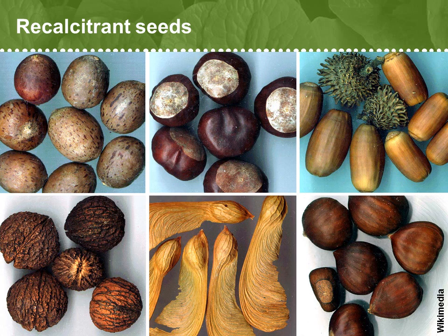Seeds that don't secrete ABA can't go dormant and are called desiccation intolerant, or recalcitrant, and it can be a real challenge to save them in seed banks. Some rice varieties fit into this category and can even sprout on the parent plant, which of course renders the grain inedible. So you can see why the study of this hormone is of importance to the nutrition of hundreds of millions of people. Incidentally, here are some other recalcitrant seeds — do you recognize a couple of these species?